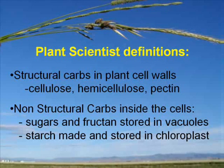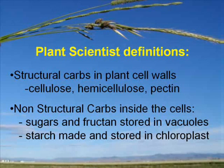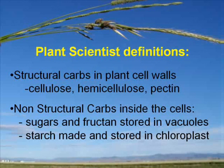Non-structural carbs are those carbs found in the non-structural part of the plant cell — inside the cell. Sugars and fructans are stored in storage bins called vacuoles. Starch is made and stored in organs called chloroplasts. Sugars, starch, and fructans are called various things by nutritionists. In the past, they were often called non-fiber carbs to differentiate them from the fiber carbs.